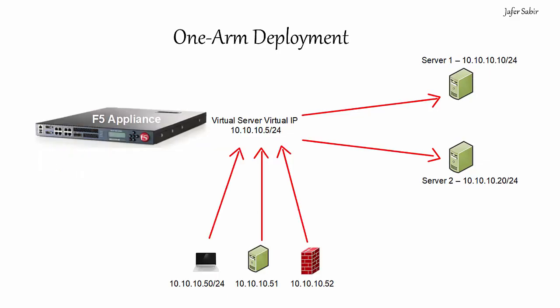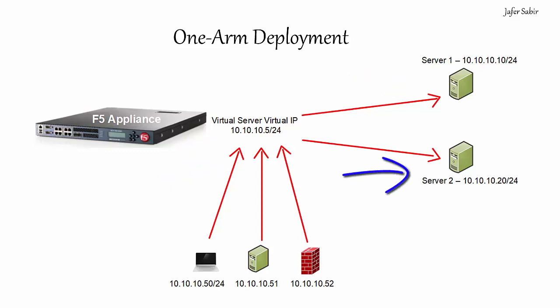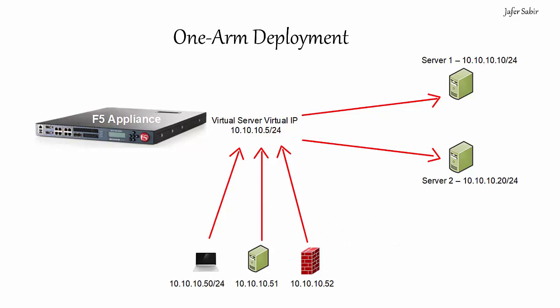Finally, one-arm mode: in one-arm deployment, the virtual server IP address is in the same VLAN and therefore within the same subnet as the servers. This is a very useful deployment method because it won't have any lengthy impact on your servers during outages, and it's simple to deploy. The term comes from the fact that it uses the same interface to receive, process, and send traffic — the VIP is on 10.10.10.5, server 1 on 10.10.10.10, and server 2 on 10.10.10.20.